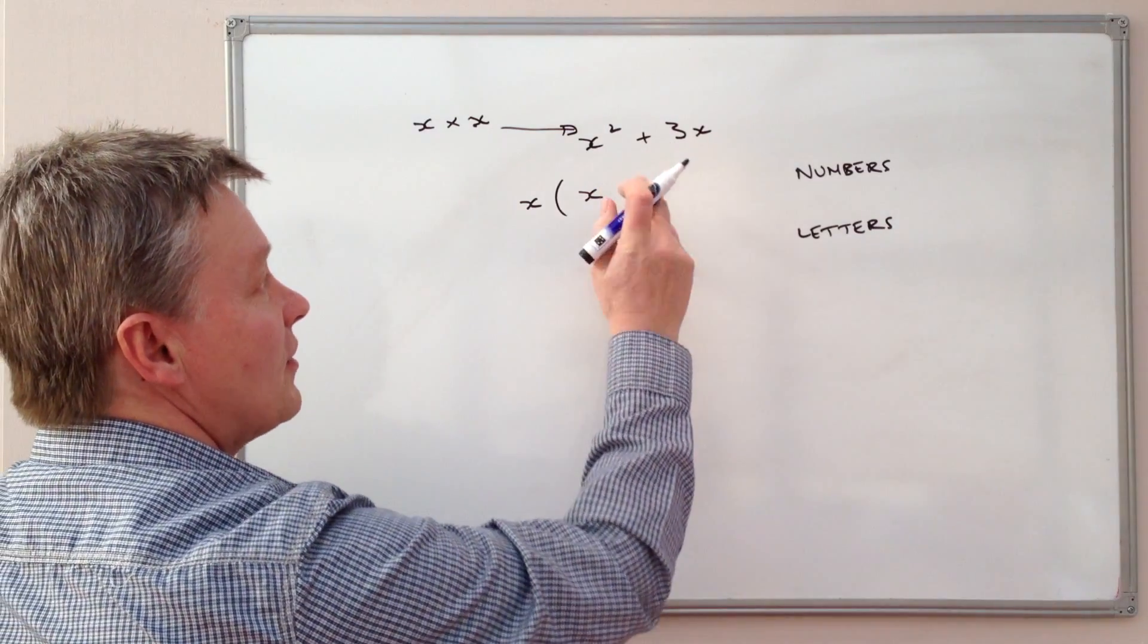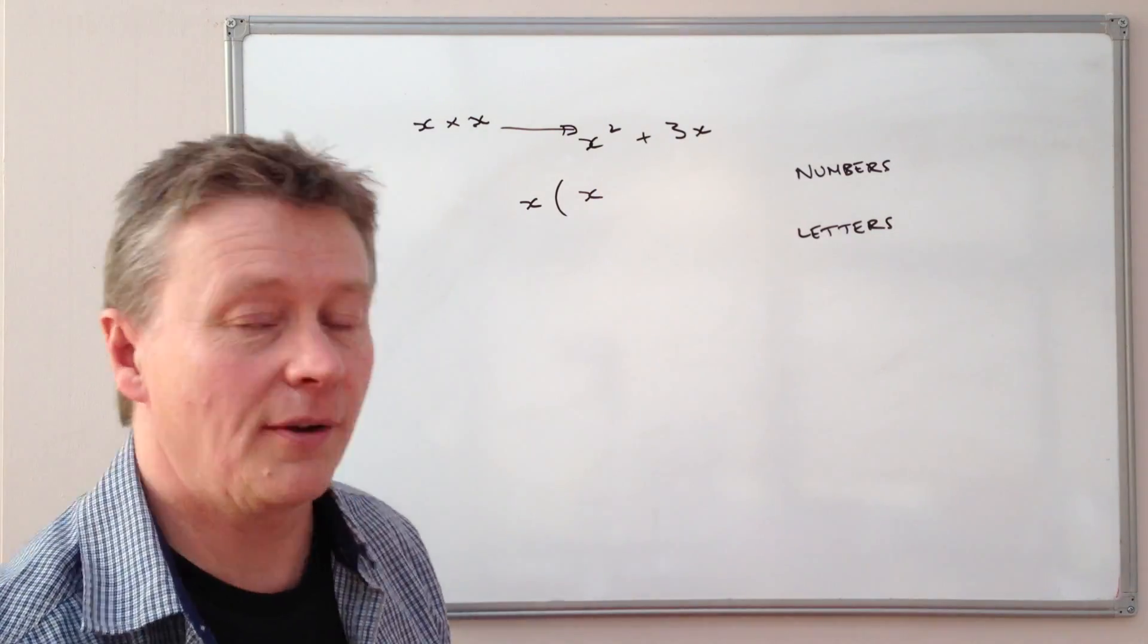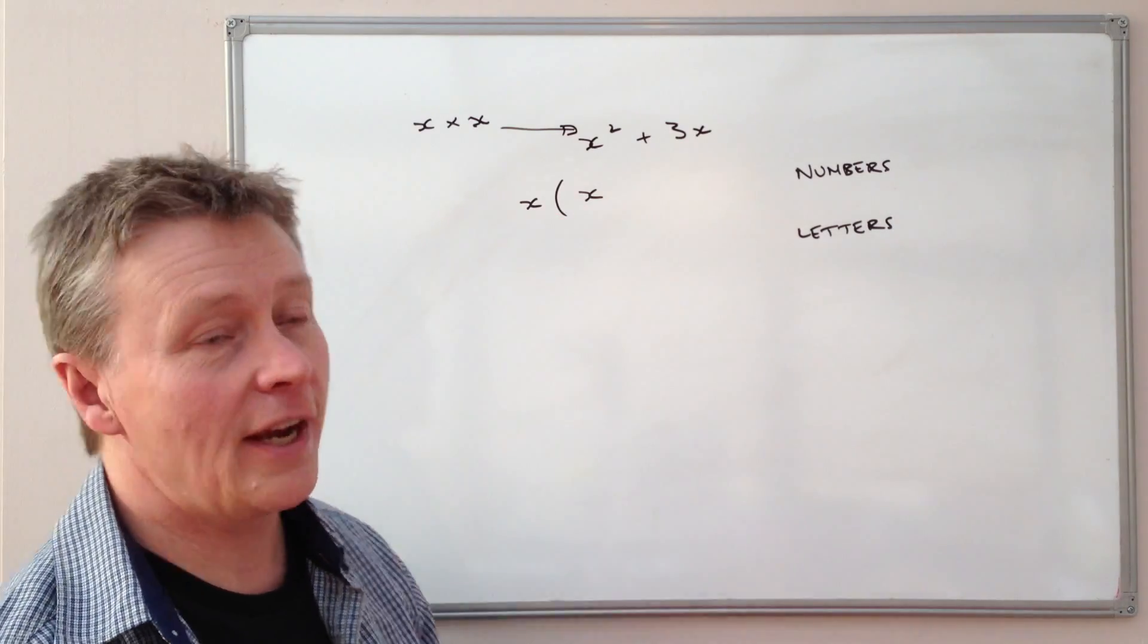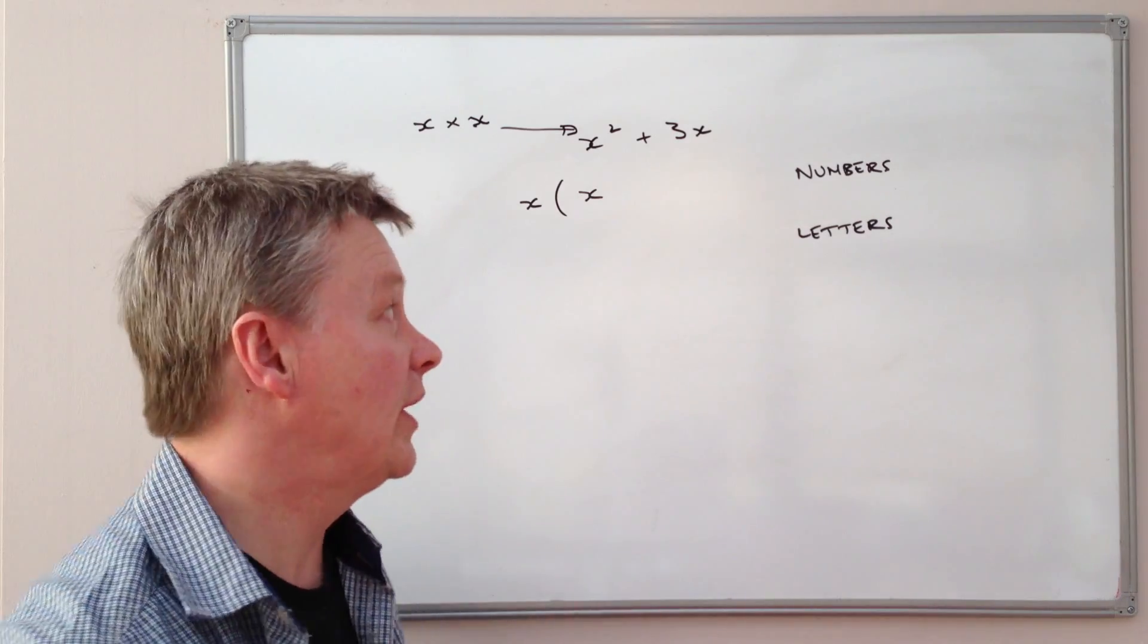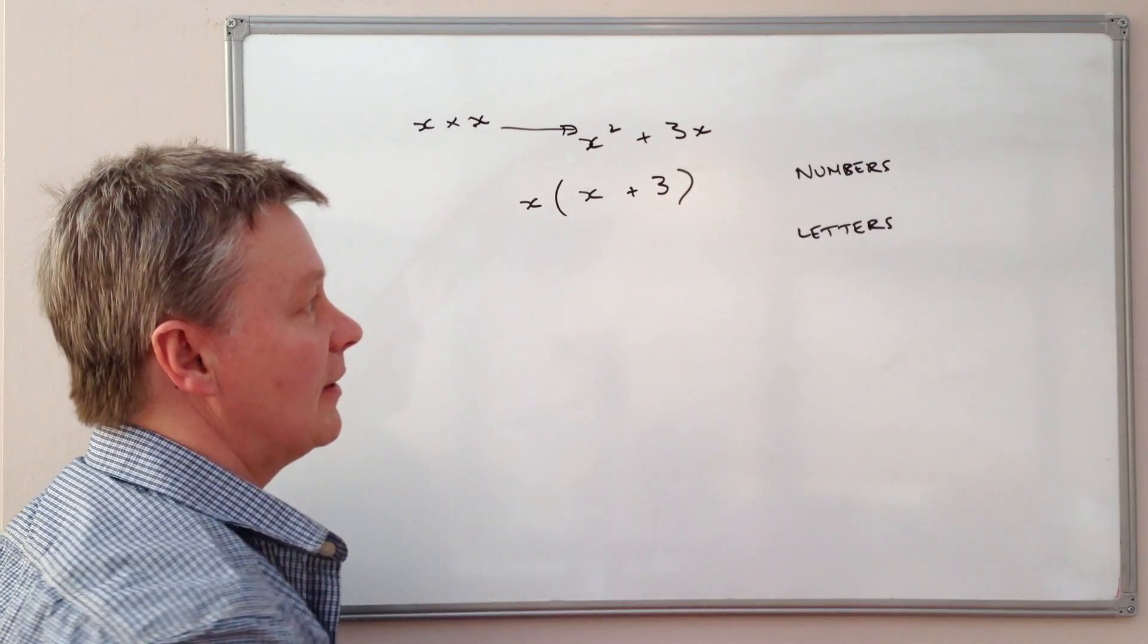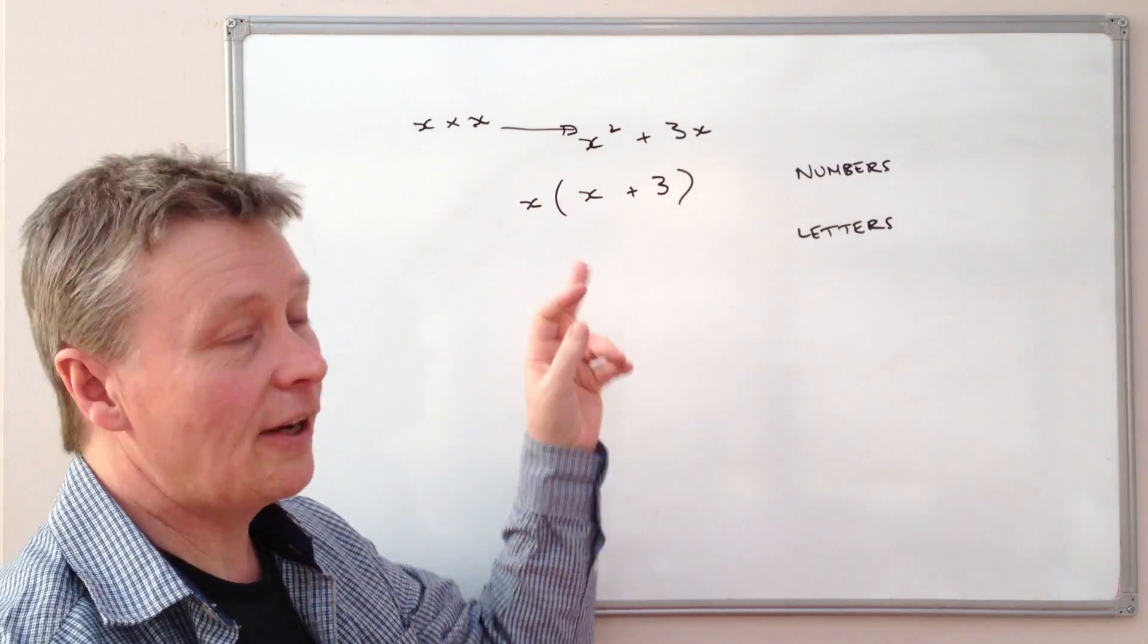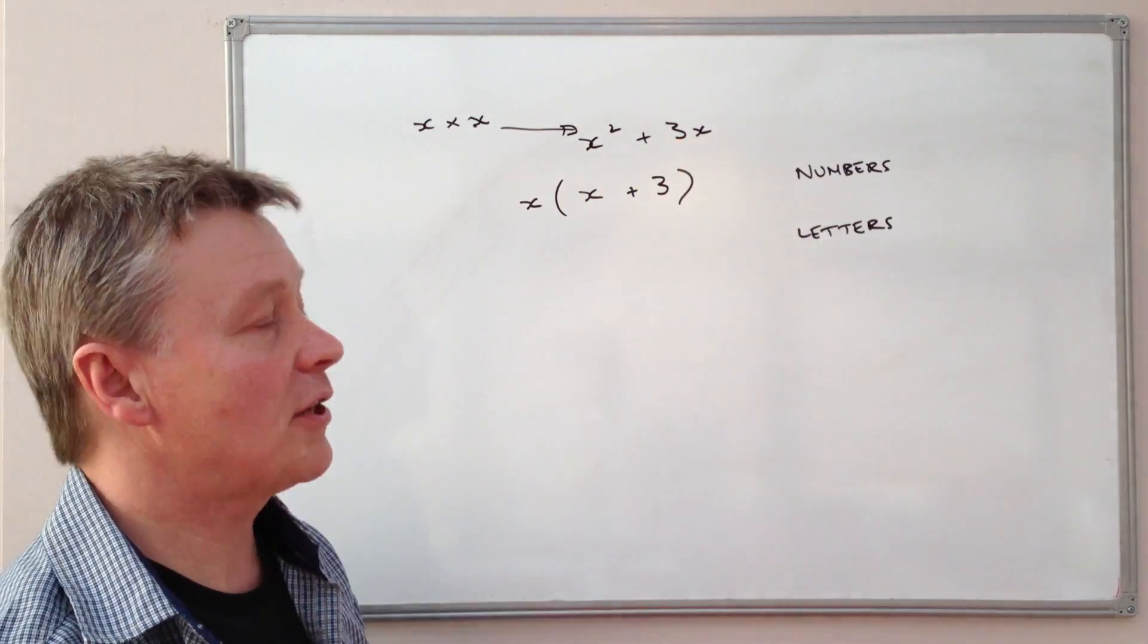The next thing we look at is this term, which is positive 3x. So it's the same question. What do we do to x in order to create positive 3x? Well, we need to multiply x by positive 3. And that would factorise, this expression here is the factorisation of this expression here.